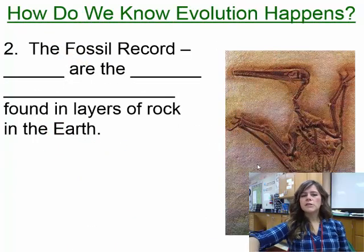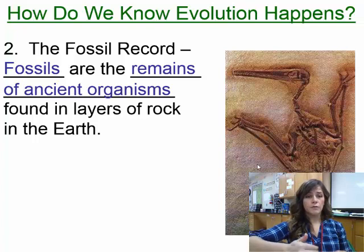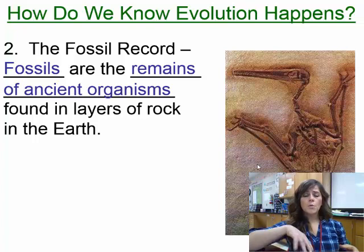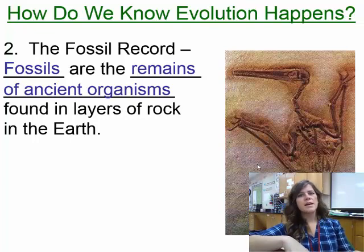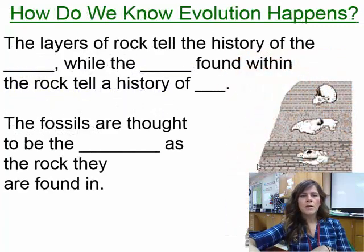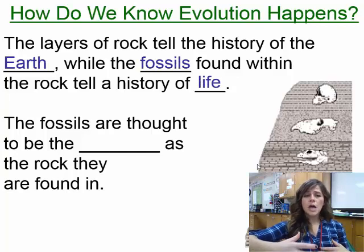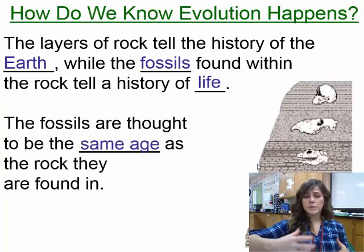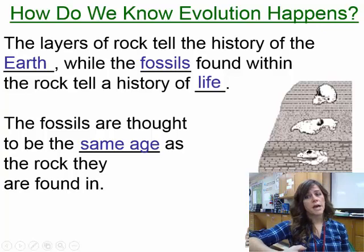The fossil record: fossils are the remains of ancient organisms found in layers of rock and earth. Darwin and the people of his time knew that fossils were ancient organisms, and that led Darwin to think about how these fossils are connected with living organisms. The layers of rock tell us the history of the earth, while fossils tell us the history of life. Fossils are thought to be the same age as the rock, and the farther deep within the rock layers you get, the less complex the organism is.